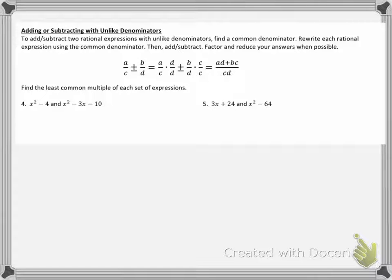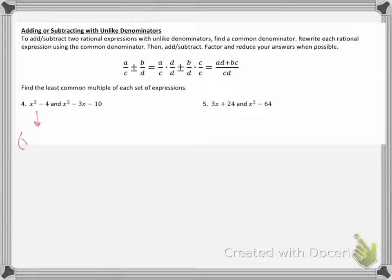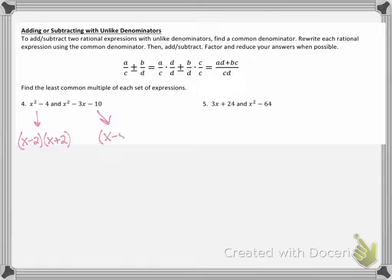So let's take a look at how we find a least common multiple — a least common denominator — when given a couple of sets of expressions. For number 4, I have x squared minus 4 and x squared minus 3x minus 10. I'm going to factor these apart. Starting with x squared minus 4 — that is a difference of squares, so I have x minus 2 times x plus 2. Now I'm going to factor x squared minus 3x minus 10 — this is a regular trinomial that factors into x minus 5 times x plus 2.